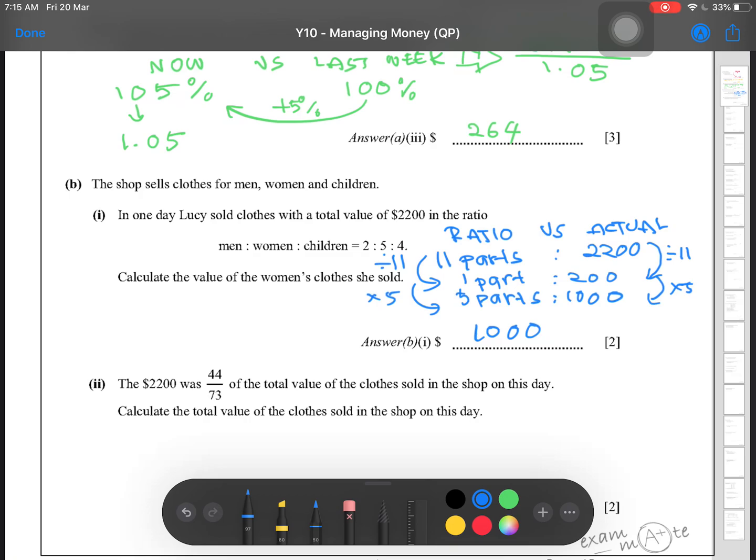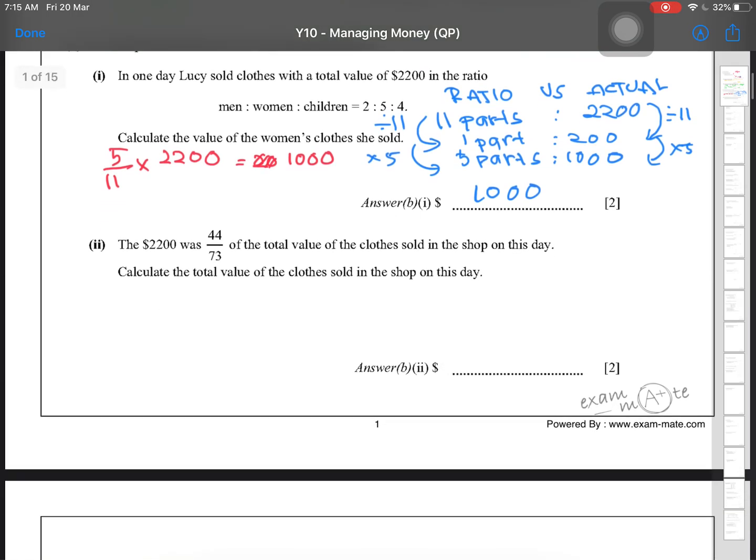This is just one method. Let's call this the comparison method. Some people are more comfortable working with fractions. So if you want to do the fraction method, it will be 5 over 11 times 2,200, and you'll still get the same answer, 1,000. Whichever you find comfortable and confident with, you can use any method for this.